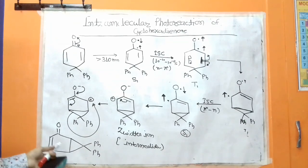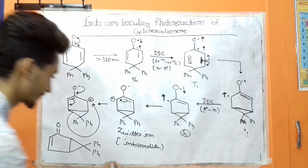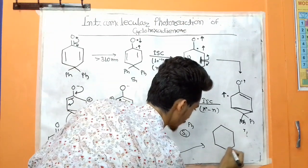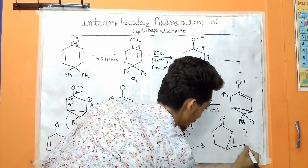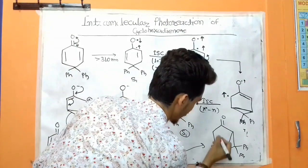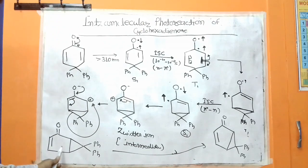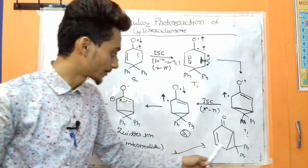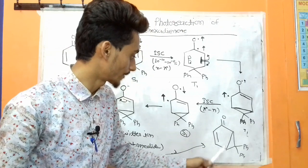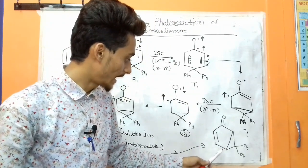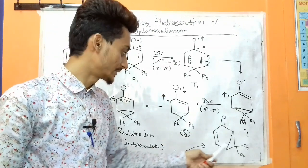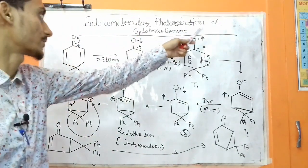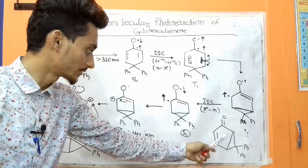The final product has a double bond and Ph groups, which can also be represented with a C=O double bond and phenyl groups. This final product is not stable because it contains an enolic group, and it is capable of undergoing n to π* transitions.